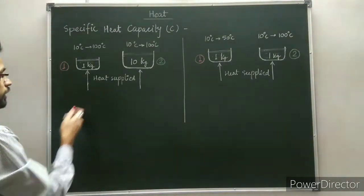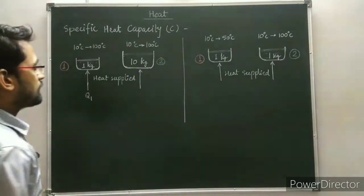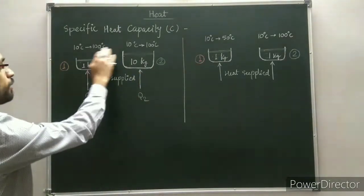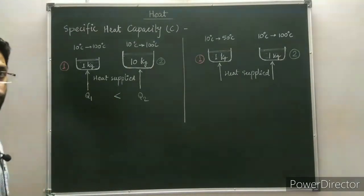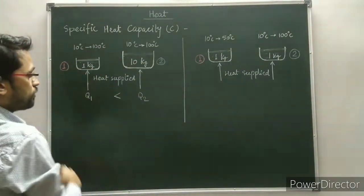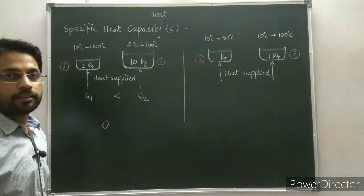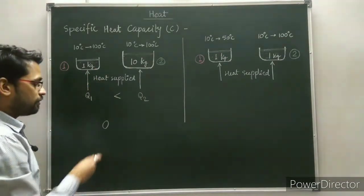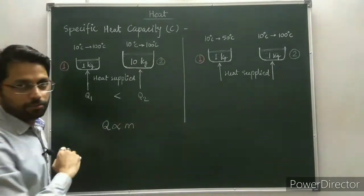So if Q1 heat is supplied to the first container and Q2 heat is supplied to the second container for the same rise in temperature, Q2 must be greater than Q1, because the mass is greater. From this discussion, we can conclude that greater the mass, greater must be the heat supplied for the same rise in temperature. So Q is directly proportional to mass, for the same rise in temperature.